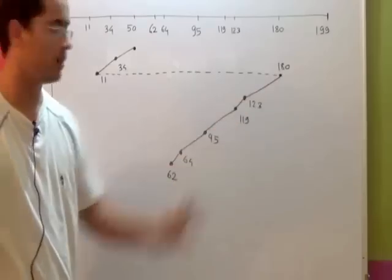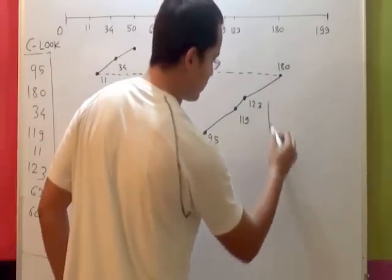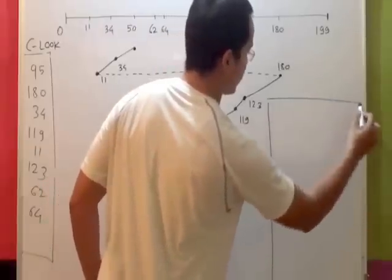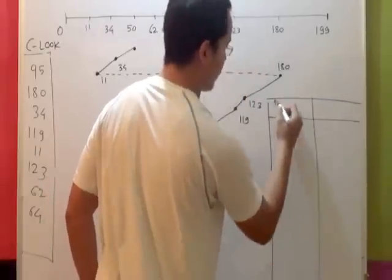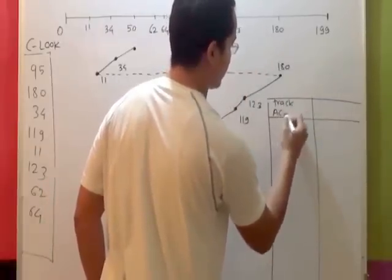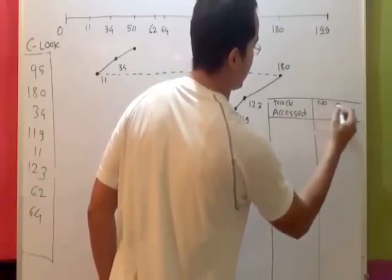Now we need to calculate the total head movement. So again, we will draw the table. As always, track accessed and number of tracks covered.